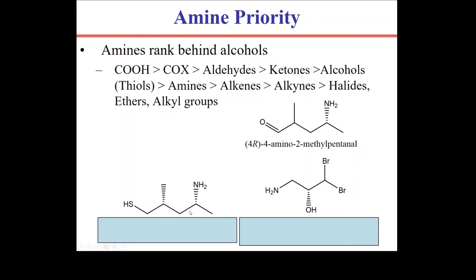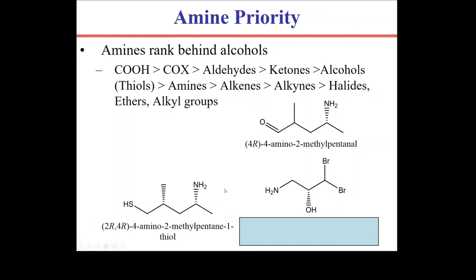This compound has both an amine and a thiol. Thiols are closely related to alcohols, so their priority is just a half step below them. Amines are a full step below those, making the thiol the highest priority group. This is a five-carbon pentanethiol, with an amino group at position two and a methyl group at position four: 2-amino-4-methylpentanethiol. Unlike the aldehyde example, the thiol doesn't scramble the stereochemistry of the methyl group, so we designate it 4R.